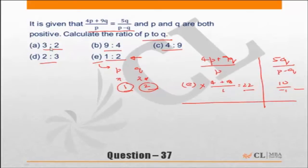Let's check the other choices. Let's check choice a. Choice a is 3 is to 2, so choice a means p equals 3, q equals 2.